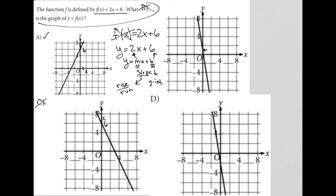And choice D has a y-intercept, looks like down here at negative 2. So choice D is out for that reason.